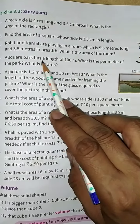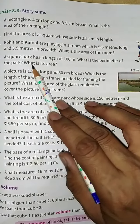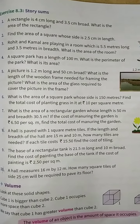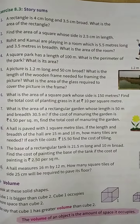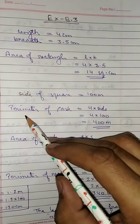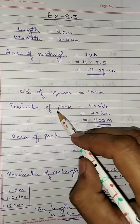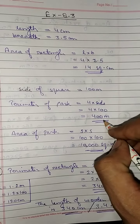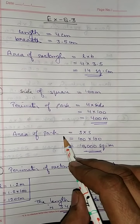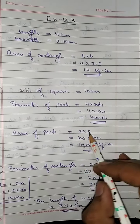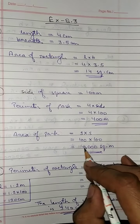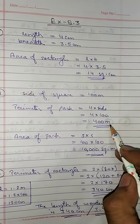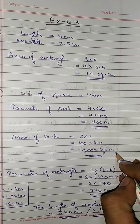Question number 4: a square park has a length of 100 meter. What is the perimeter of the park and what is the area? The perimeter of a square is 4 into side, and side is 100, so 4 into 100 is equal to 400 meter. To find the area of the park, side into side — 100 into 100 — equals 10,000 square meter. Note there is a difference in units: for perimeter we use meter and for area we use square meter.